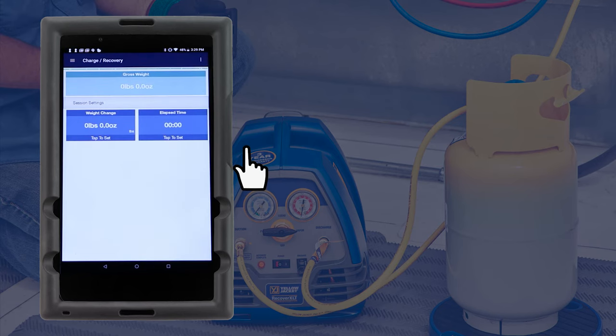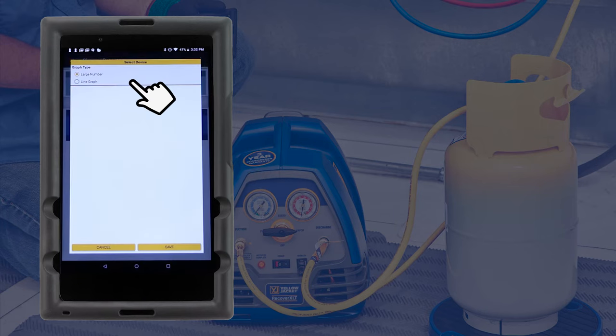The scale gross weight will display at the top of the screen in a numeric format. If a line graph display is preferred, simply tap on the numeric reading and select line graph instead.